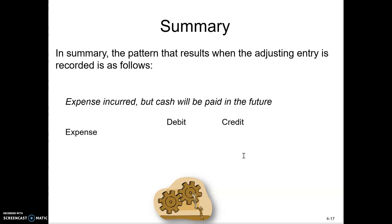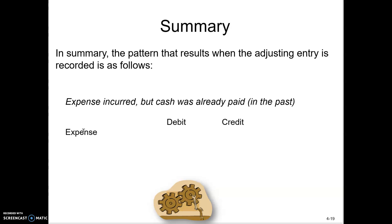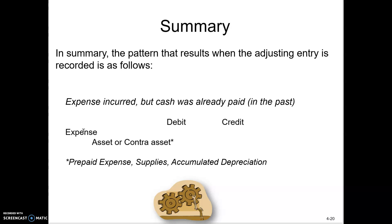For accrued expenses, the expense has been incurred but the cash will be paid later. We debit the expense and credit a payable — we've incurred the expense this period but won't pay until next period. For deferred expenses, the expense was incurred but the cash was already paid. We debit the expense. When we paid for an expense before incurring it, we debited prepaid expense. So now we're using up that prepaid expense — our credit goes to the prepaid expense asset account.